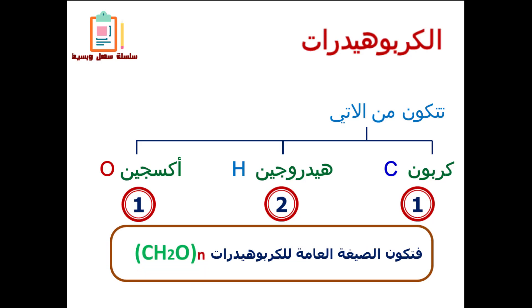حيث n هي عدد الجزيئات من الجزيء CH₂O. على حسب عدد n بيتم معرفة نوع الكربوهيدرات أو نوع السكر اللي عندي.